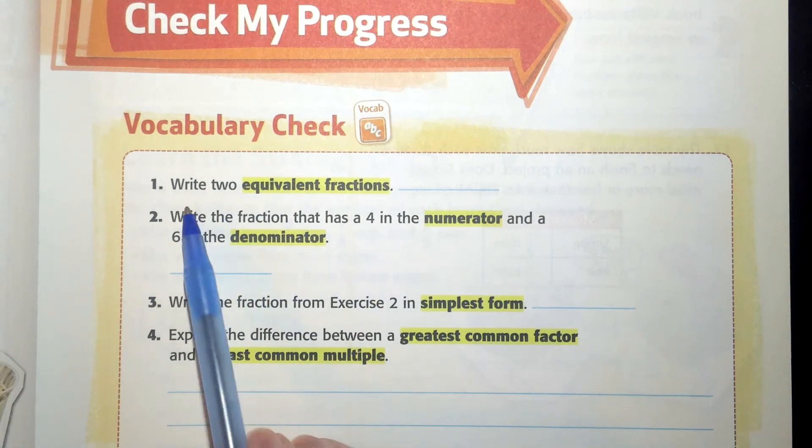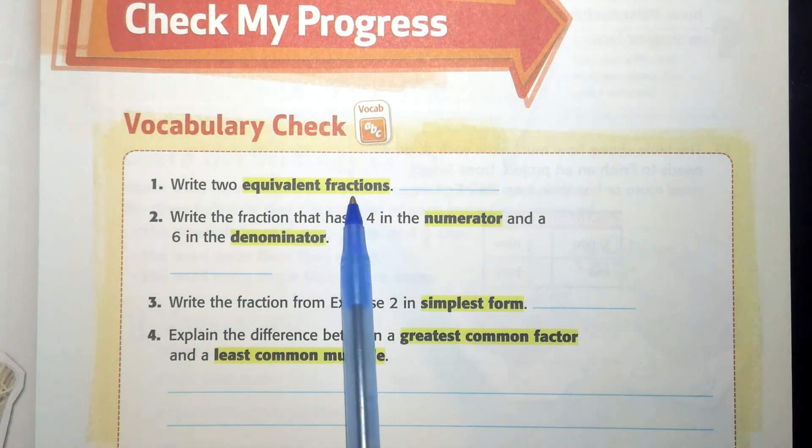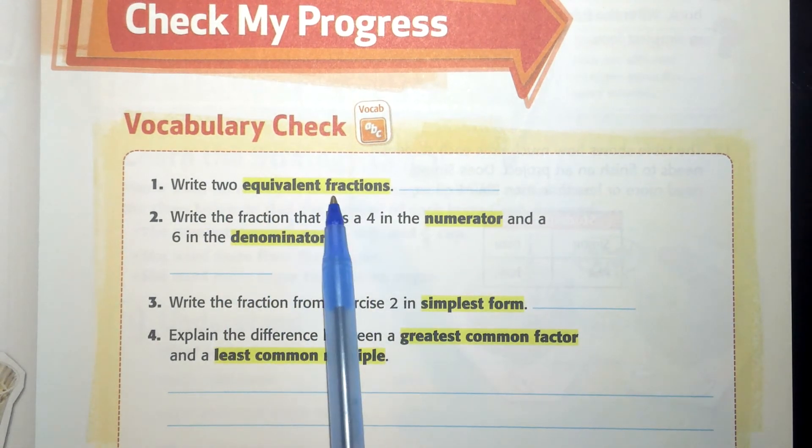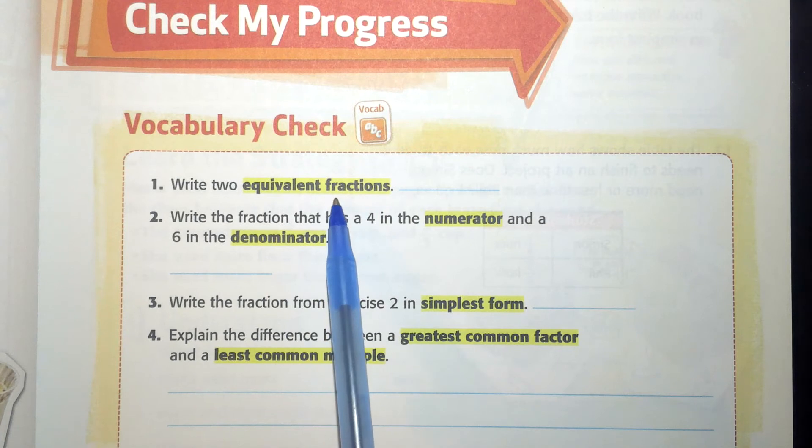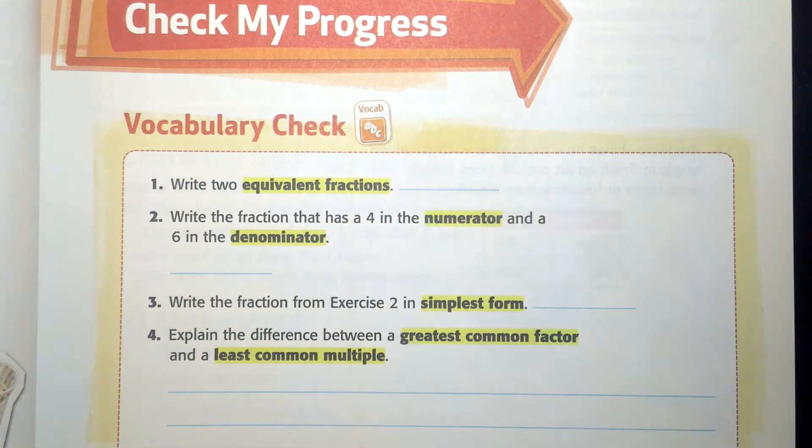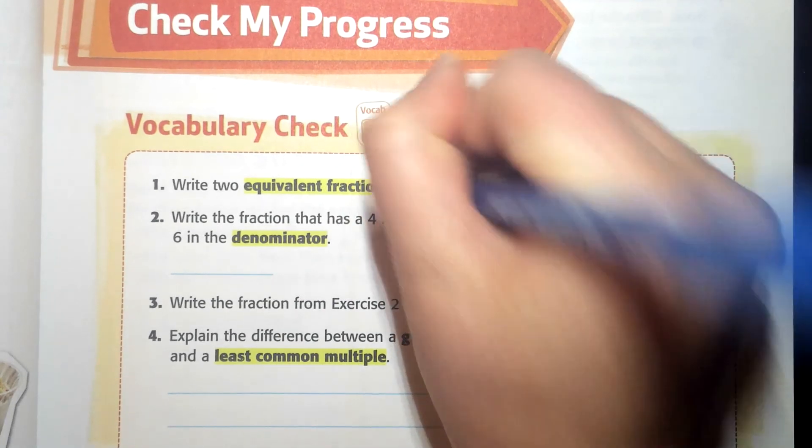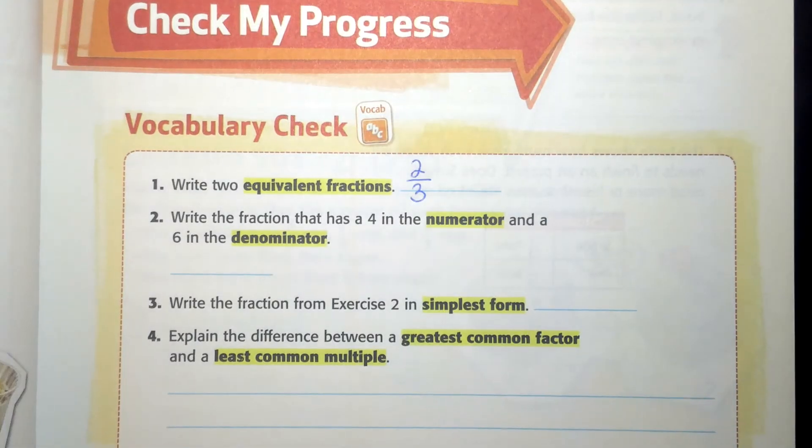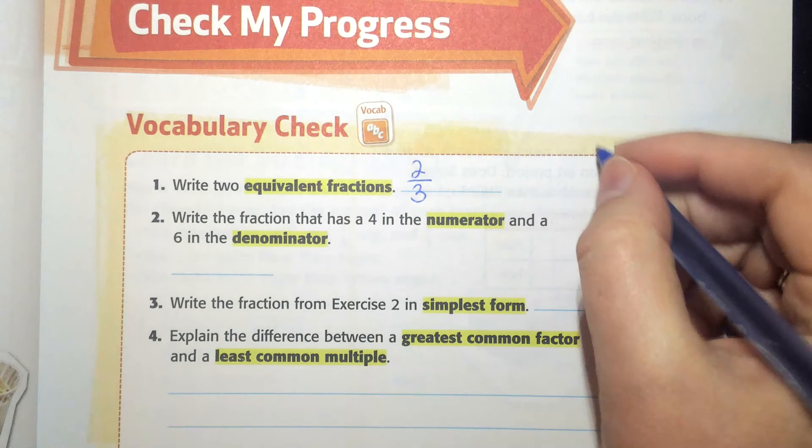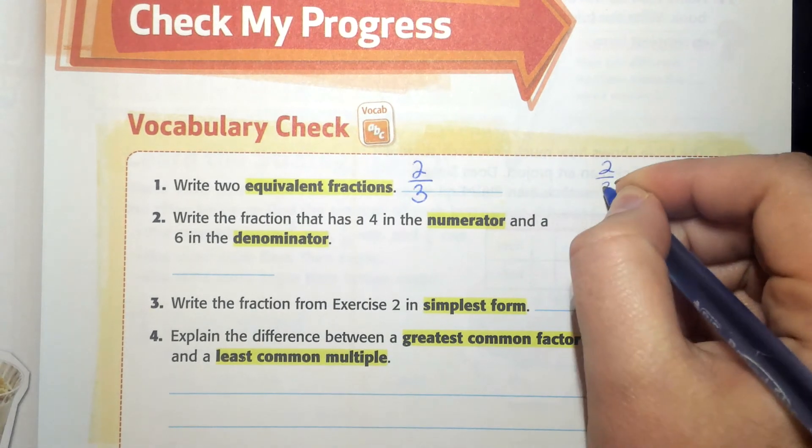Write two equivalent fractions. I know equivalent fractions are fractions that represent the same part of a whole. So I'm going to make up a fraction like two-thirds. I can find a fraction that's equivalent to two-thirds by multiplying the numerator and the denominator by the same number.